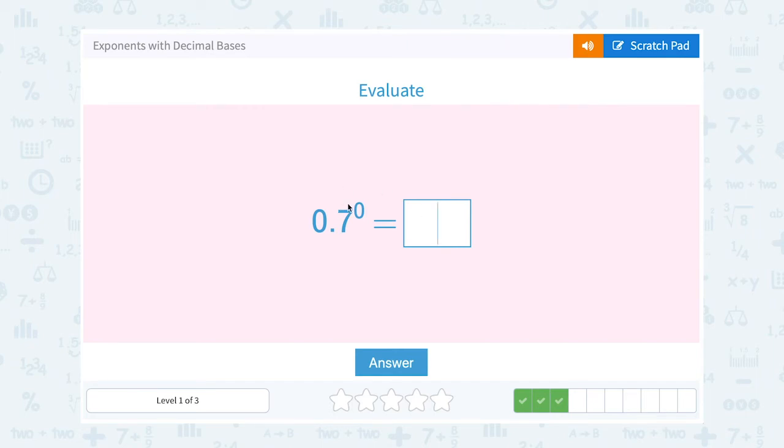0.7 to the 0 power. Well remember, anything to the 0 power is 1. So this would just be 1.